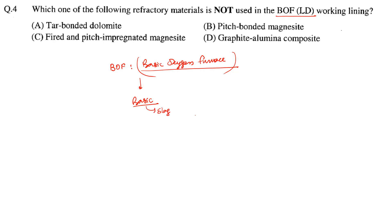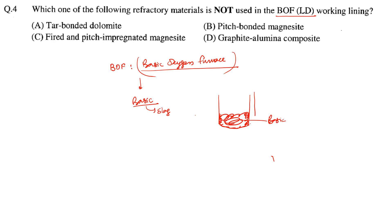Since the slag is basic, if you keep the lining as acidic there will be an acid-base reaction. So we need a lining which is also basic. The options are: tar-bonded dolomite, pitch-bonded magnesite fired, pitch-impregnated magnesite, and graphite-alumina composite.